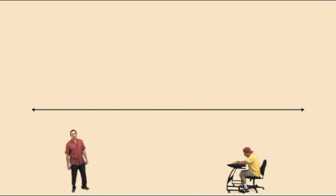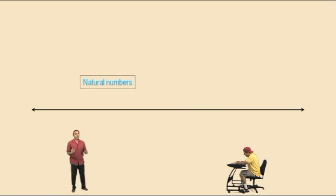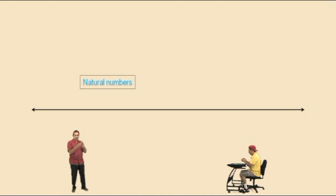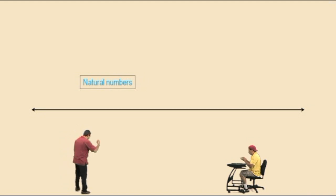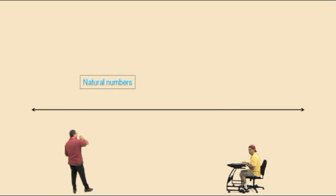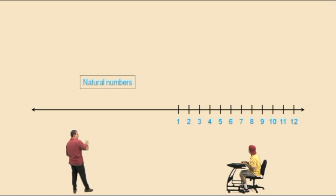The first set of numbers we're going to talk about within the real numbers is the natural numbers. Those are basically the numbers we count on our fingers, like 1, 2, 3, 4, 5, 6, 7, 8, 9, 10, 11, 12, 13 — you can go on forever and ever up to positive infinity. So let's go ahead and label our real number line with those natural numbers. There they are.